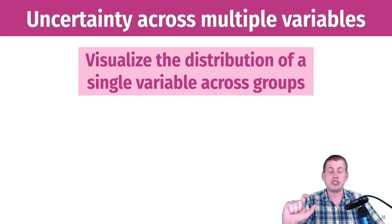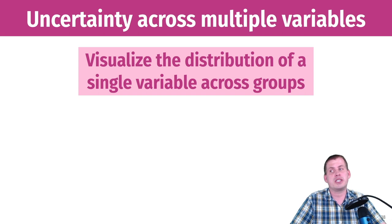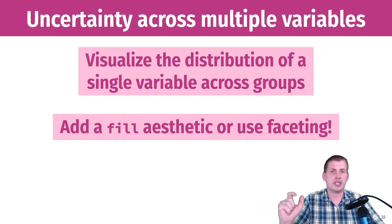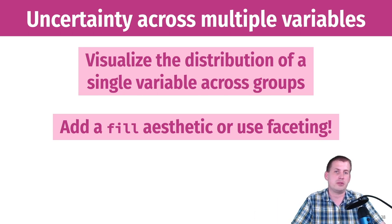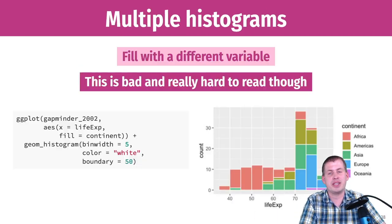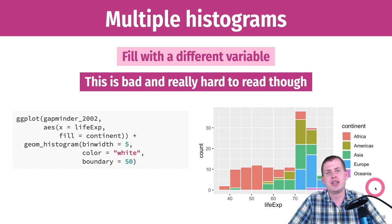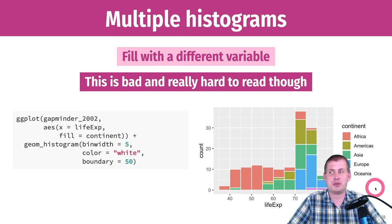You can also show the distribution of a single variable across different groups. In ggplot, just add another aesthetic: fill by a variable, color by a variable, or facet by a variable. Going back to the Gapminder data, here's the distribution of life expectancy filled by continent, giving us five different distributions. However, filling a histogram by a variable like this is actually really bad.